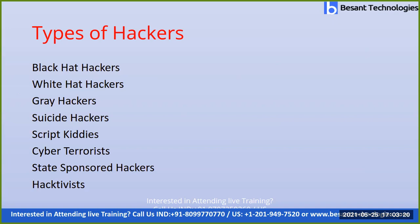A gray hat hacker is an individual who can work offensively or defensively and may fall into either white or black hat categories. They know both software and hardware hacking. A suicide hacker aims to bring down critical infrastructure for a cause and does not worry about punishment such as jail. Script kiddies are people who have no real skills but run attacks using tools or software created by real hackers.